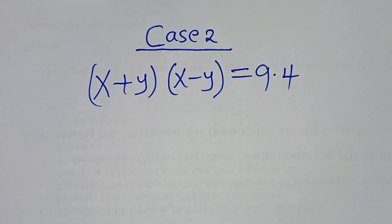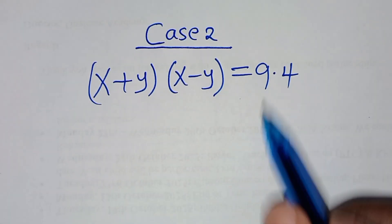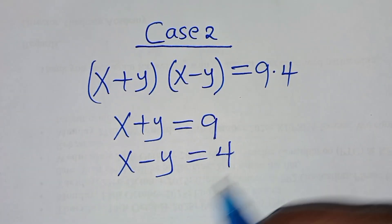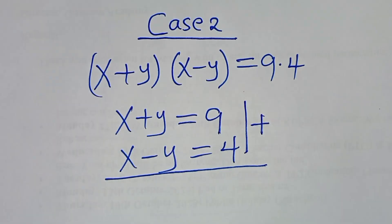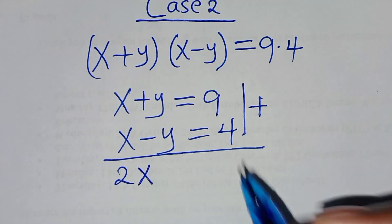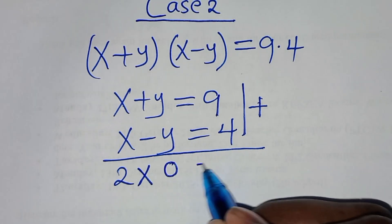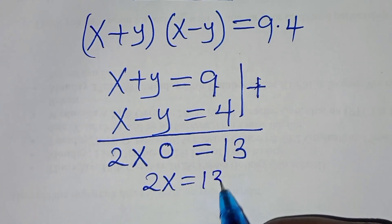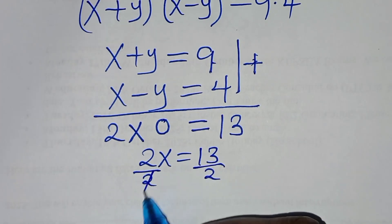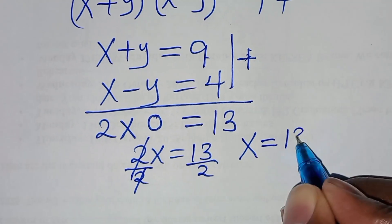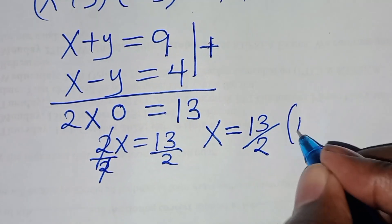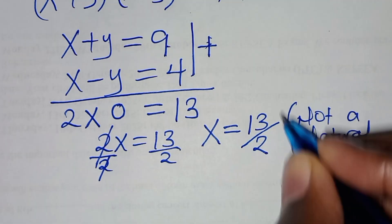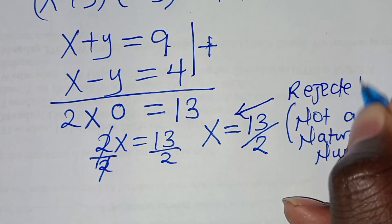Let's proceed to case 2. We have x plus y times x minus y equals 9 times 4. So x plus y equals 9 and x minus y equals 4. Adding these equations: 2x equals 9 plus 4, which is 13. So x equals 13 over 2, and this is not a natural number. Case 2 is rejected.